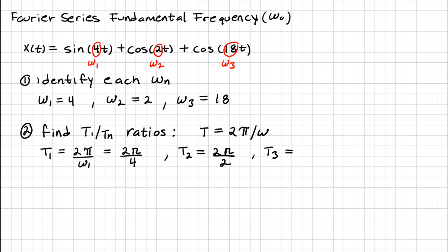My T₃ is 2π over 18. So now I'm going to find all the combinations, T₁ over each one of the other periods. So for this case, we have 2 over 4, and then that reduces to 1 over 2.